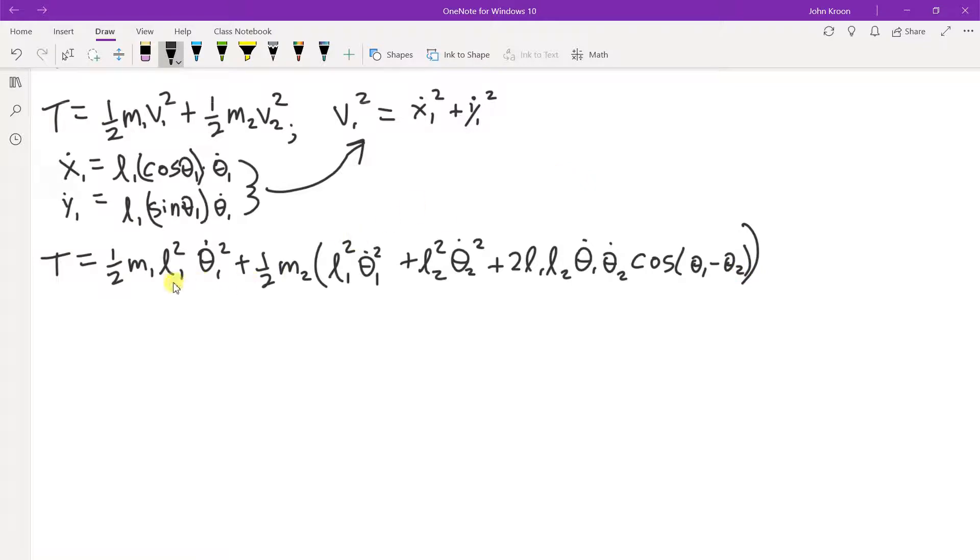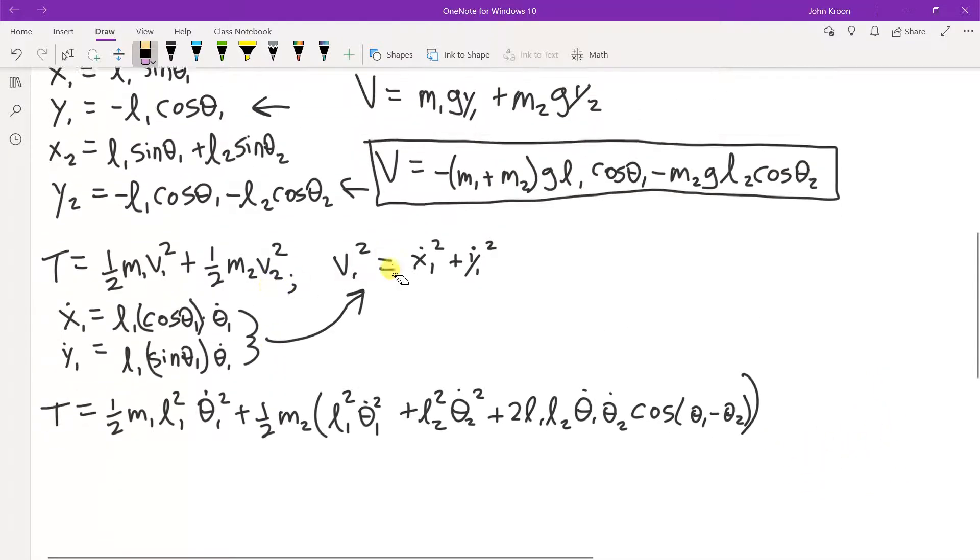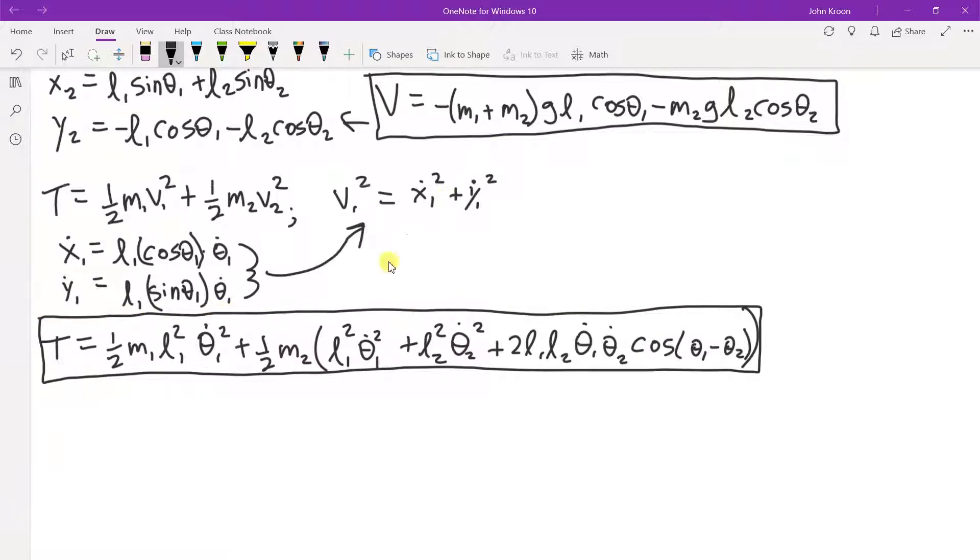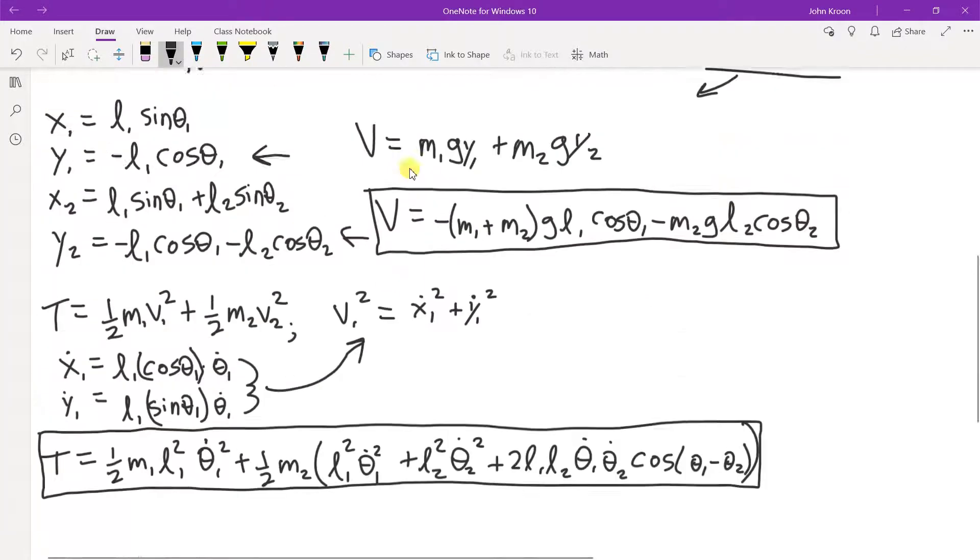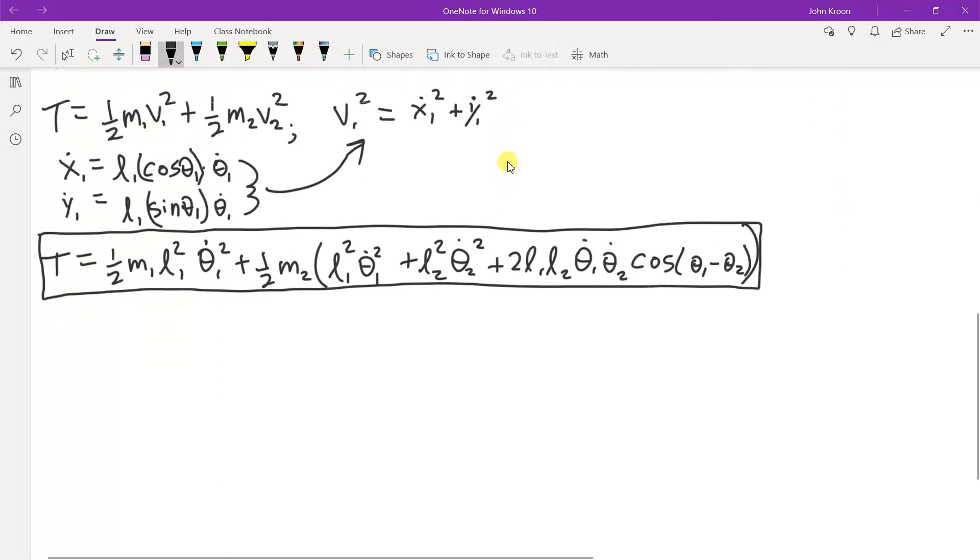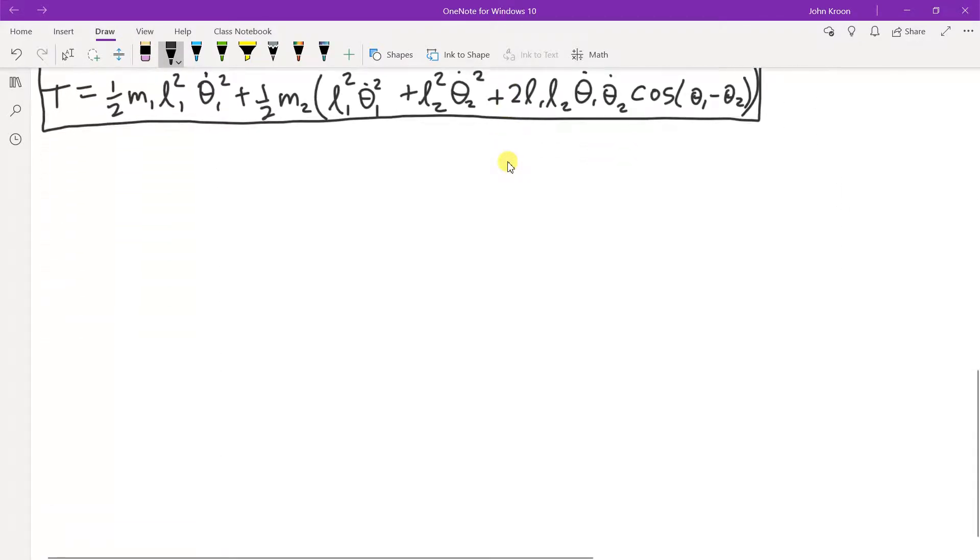Now remember, we have, all right, so the next thing we want to do is construct our Lagrangian by making use of the V and T that we have found. So that T and that V. So now we can construct our Lagrangian L equals T minus V. So let's take a look at that.